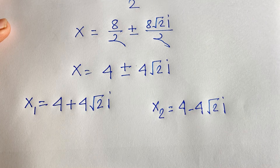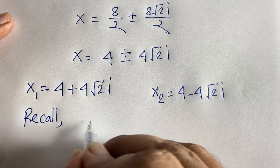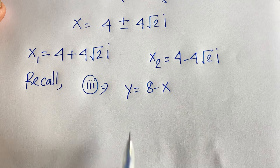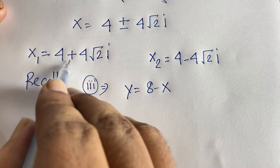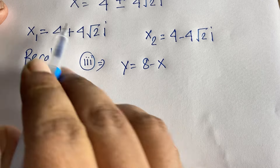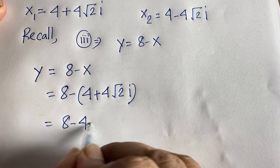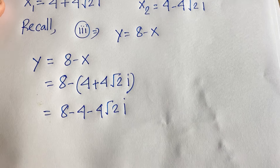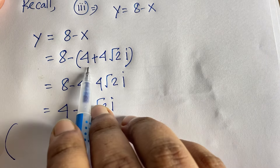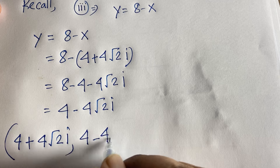Now we need the value of y. Recall our third equation: y equals 8 minus x. When x₁ equals 4 plus 4√2·i, then y equals 8 minus (4 plus 4√2·i), which gives 8 minus 4 minus 4√2·i, so y equals 4 minus 4√2·i.